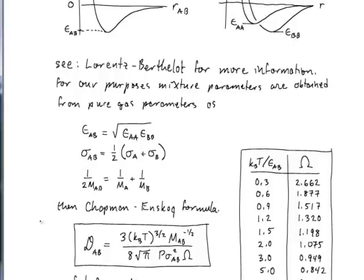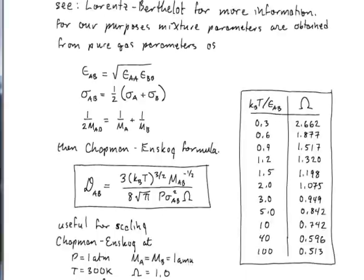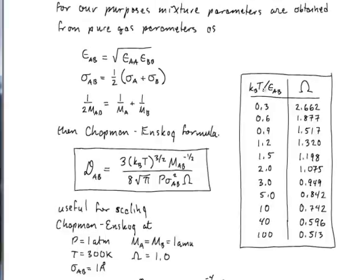And at the end of the day, the formula that Chapman and Enskog derived is this. The diffusivity of AB again has the T to the three halves dependence. Again has the effective mass to the minus one half. Again, pressure to the minus one. And again, collision diameter to the power minus two. There is this collision integral that characterizes the degree to which they stick. And that depends on this kT over epsilon parameter. So when you look up this kT over epsilon, you get the value of this collision parameter. And we'll continue more next time.